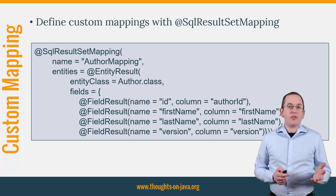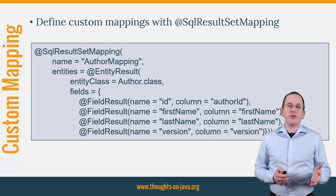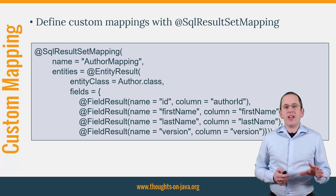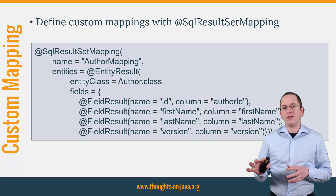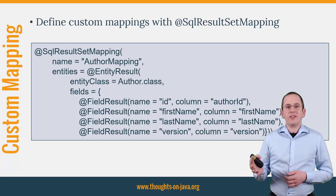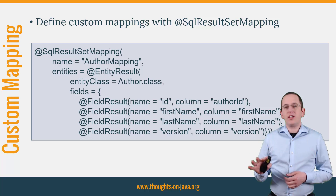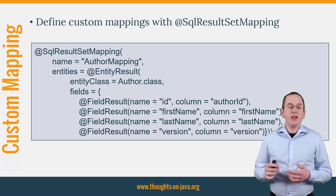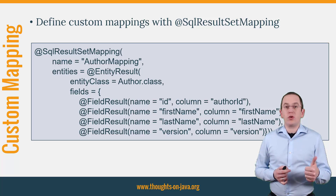While this automatic mapping is useful and easy to specify, it is often not sufficient. If you perform a more complex query or call a stored procedure, the names of the returned columns might not match the entity definition. In these cases, you need to define a custom result mapping. That needs to specify the mapping for all entity properties, even if the default mapping cannot be applied to only one property.